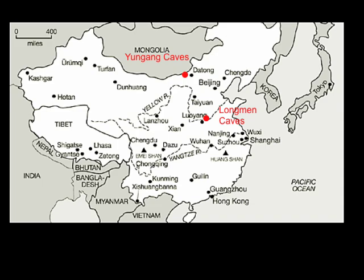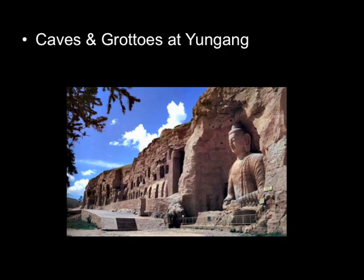If you drew dots between Kashgar, Turfan, Dunhuang, Datong, Luoyang, and Xi'an, you'd have parts of the Silk Road mapped out. I've got red dots there for the two cave sites we're going to look at — Yungang is the earlier one from the earlier part of the Northern Wei, and Longmen is later. Along the Silk Roads at the site of the Northern Wei capital, we have the emergence of caves and grottos dedicated to the worship of the Buddha.